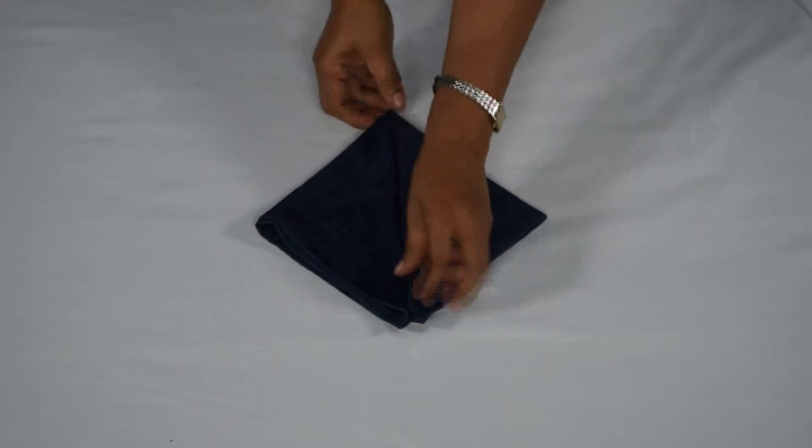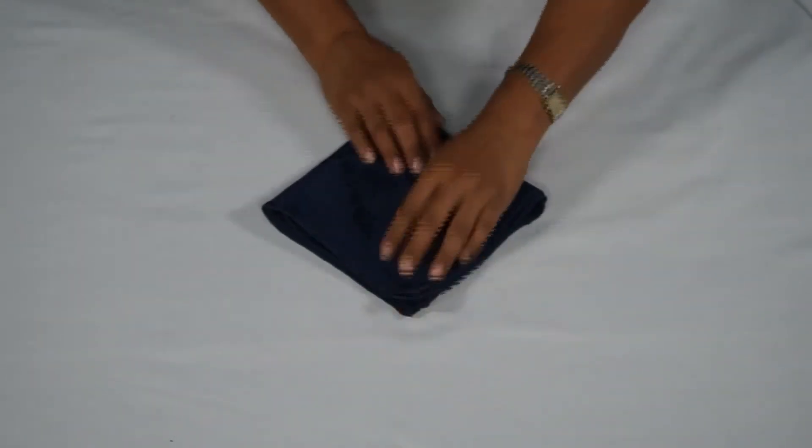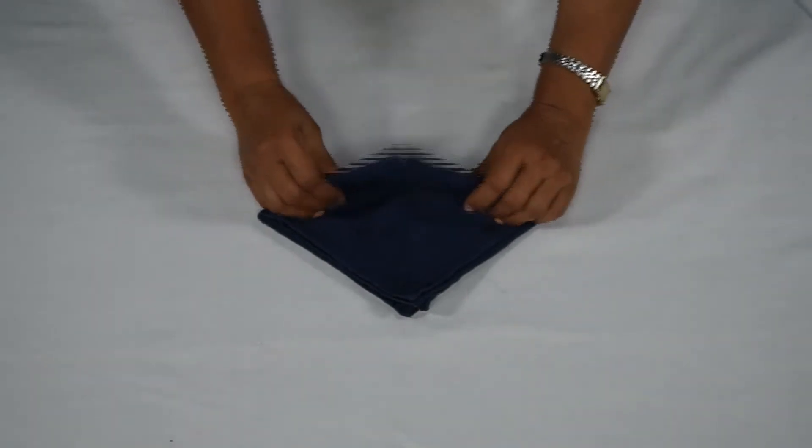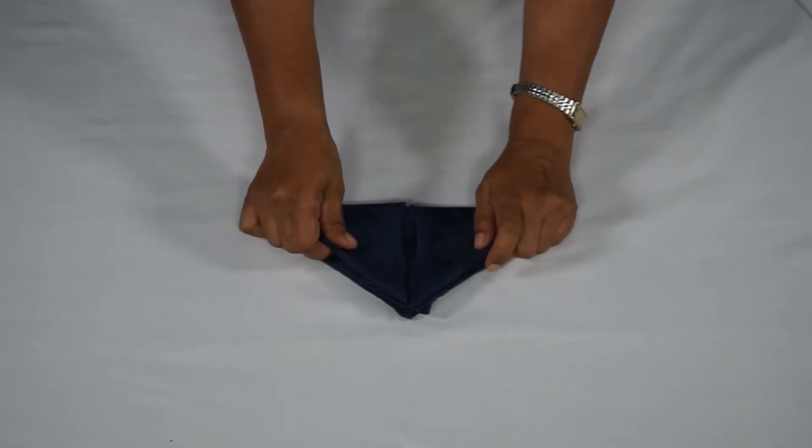Turn the napkin over, keep the open end facing away from you. Fold the napkin in half by bringing the farthest point of the diamond up to the back to the nearest point.